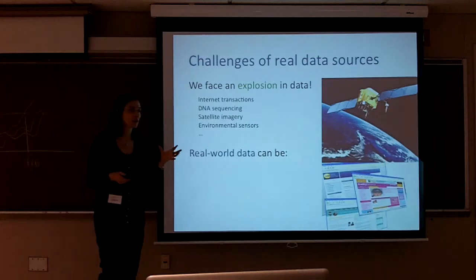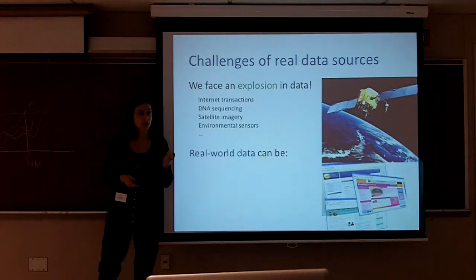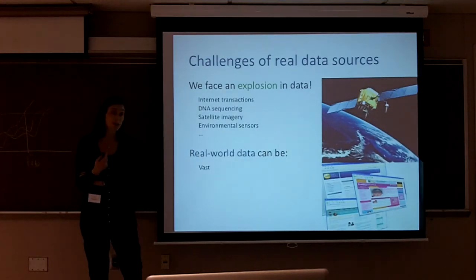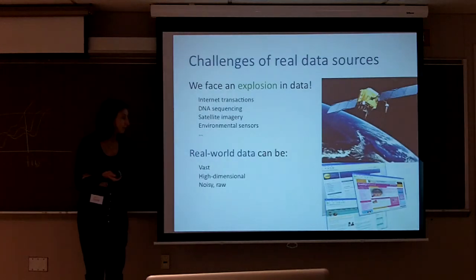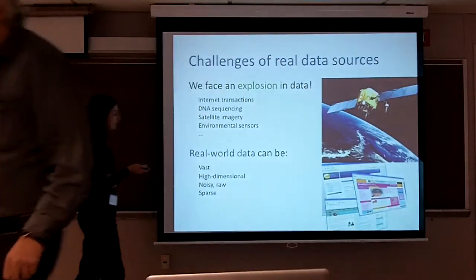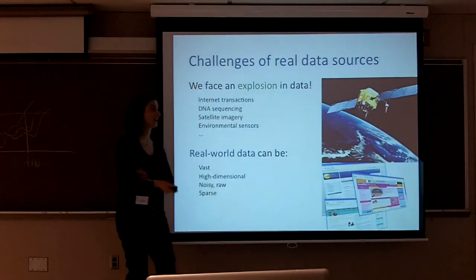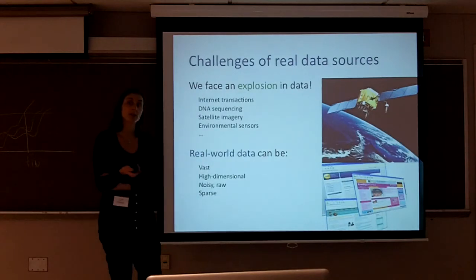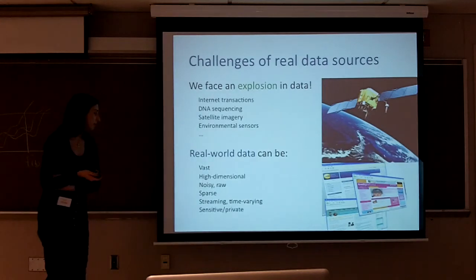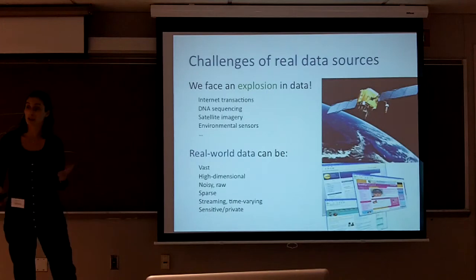Machine learning is tasked with finding patterns in data, but these real data sources have attributes that are challenging and for which we need to adjust our machine learning algorithm design. Not only is there quite a bit of it, it can be extremely high dimensional. Sometimes it's noisy or raw — partially distorted or missing in places. It can be sparse, meaning that even though you record data at high resolution, the information of relevance lives in a much lower dimensional subspace. Some data arrives in a stream over time or is time-varying. Some data is sensitive or private, such as individuals' medical records or financial records, which are increasingly being analyzed.